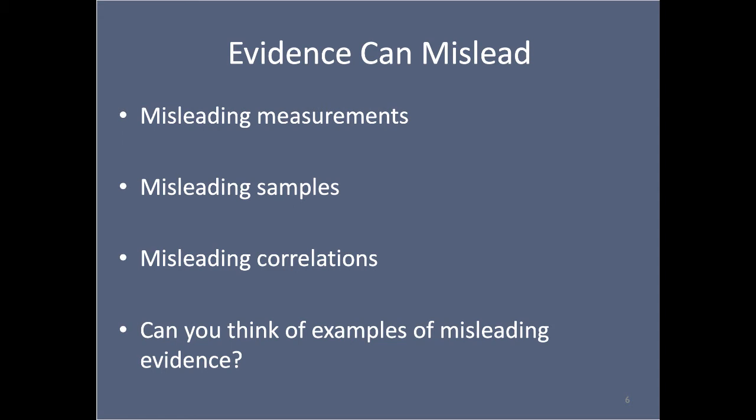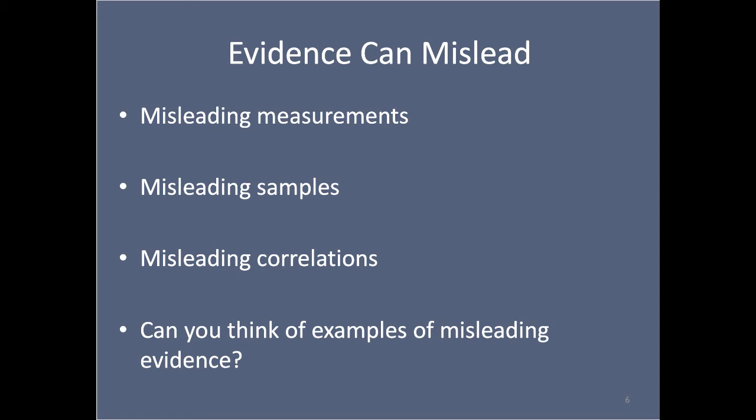In my day, you often heard people say 'I'm going to the library to do some research.' Nowadays people will say 'I'm going online to do some research.' When people say that, they mean what we call secondary research — searching for research information produced by others. Our focus in this course is the methods to do primary research — that's the production of research or information, which involves original data collection, going out and collecting new data for yourself, and/or original data analysis. Maybe somebody else produced the data, but you're analyzing it in some new way.